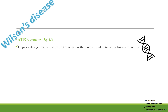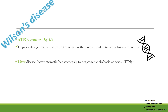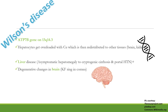The liver cells get overloaded with copper, which is then redistributed to other tissues like the brain and kidneys. Liver disease can vary from asymptomatic hepatomegaly to cryptogenic cirrhosis and portal hypertension. There are degenerative changes in the brain, and Kayser-Fleischer rings are seen in the cornea.